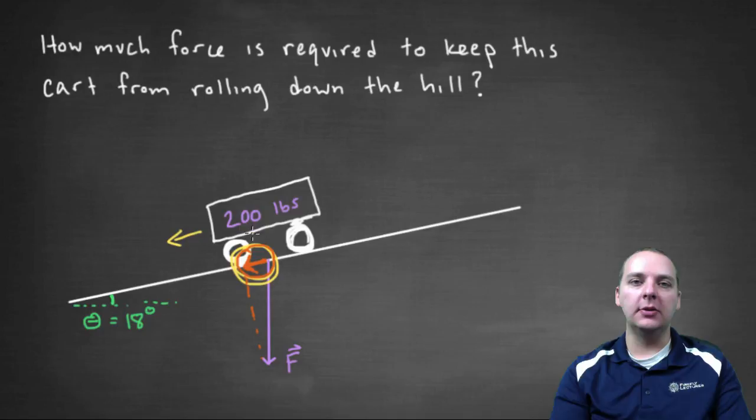Obviously we don't need all 200 pounds of force to keep it from rolling down the hill. It's only a portion of that 200 pounds that depends a lot on the angle of the hill. The meat of this problem is determining this orange projection vector.